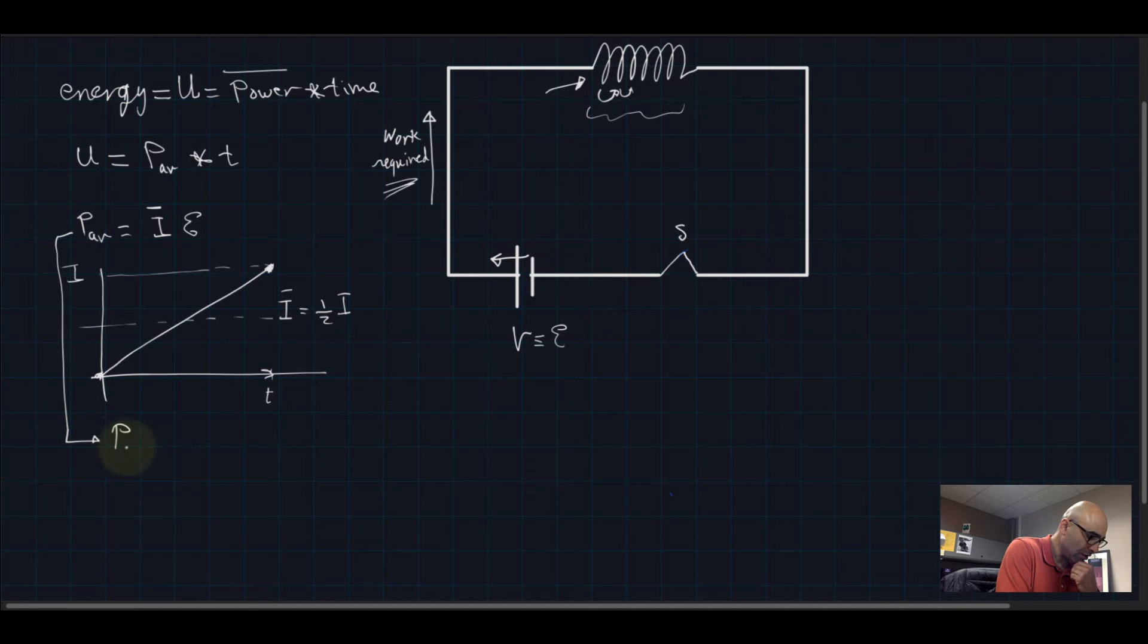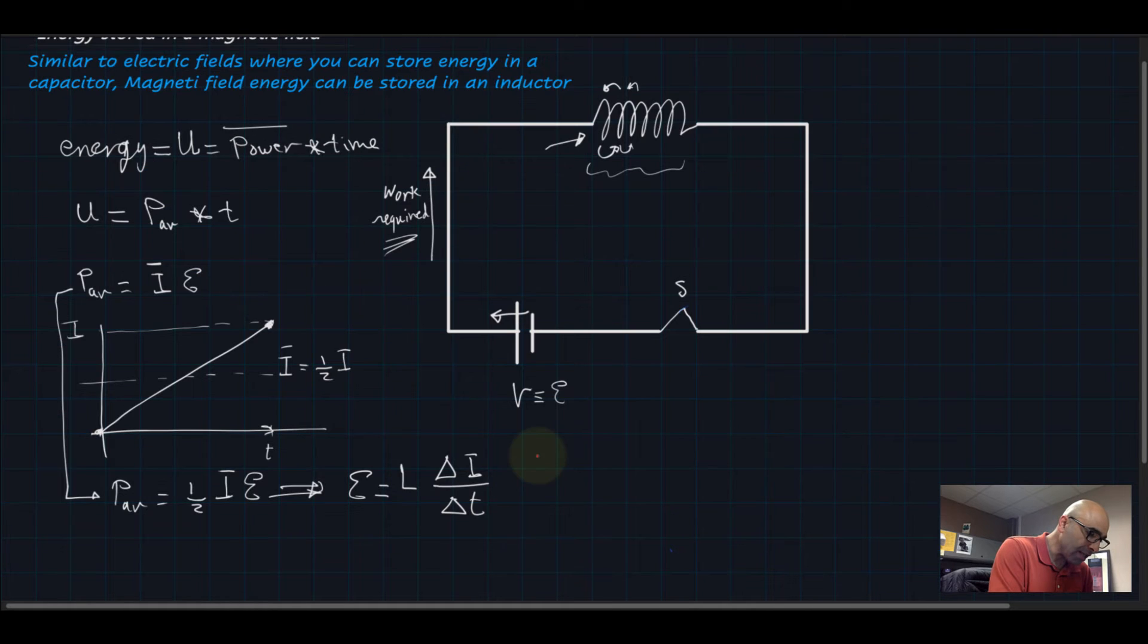Now the electromotive force here, as we defined it before, is equal to the inductance times the change in the current over the change in time. Delta I means the change in the current from I2 to I1. So I1 is just equal to zero at T equals zero, and T equals zero is the time we close the circuit here at the switch.